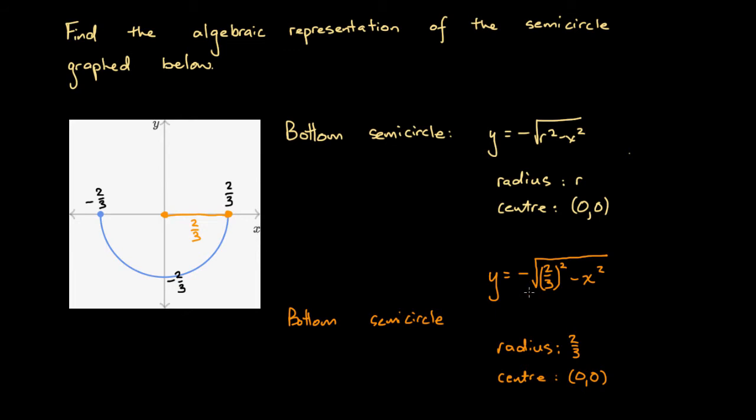And we're almost there. In order to write it in final form, we just need to simplify this. Let's quickly consider what is 2 over 3 squared.